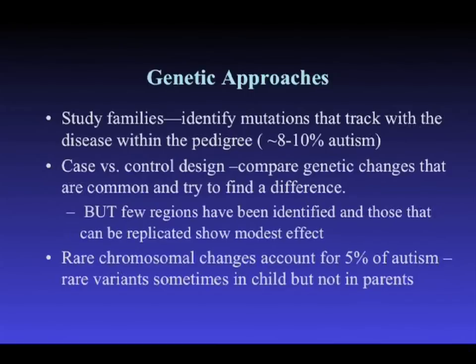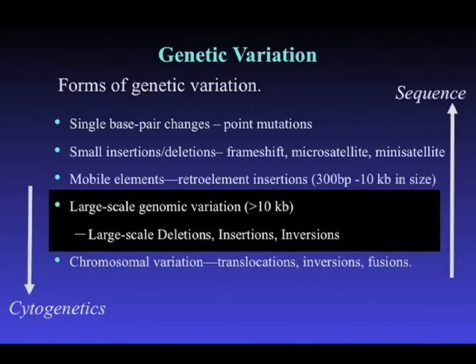When thinking about any disease, it matters not only whether it's familial or not, but also what type of mutation you're looking for. In any organism — fly, C. elegans, or human — there is a wide spectrum of genetic variation, ranging from very abundant single base pair changes all the way up to large chromosomal rearrangement events visible under a microscope.